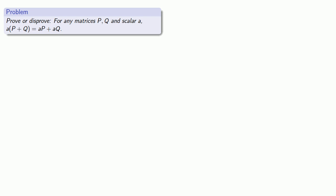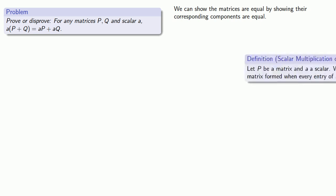Because of the way we write things, what that's going to give us is some scalar a times the sum of two matrices P + Q. And if I have that factor of a on the left, the question at hand is whether or not it's true that a times the sum P + Q is the same as aP + aQ. Now we can show two matrices are equal by showing that their corresponding entries are equal.